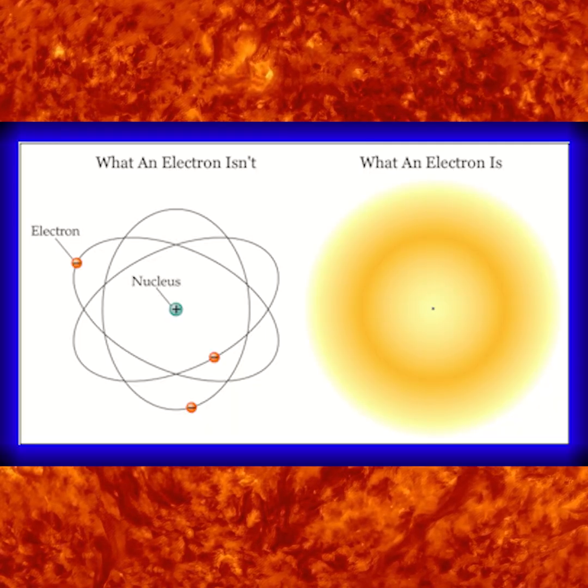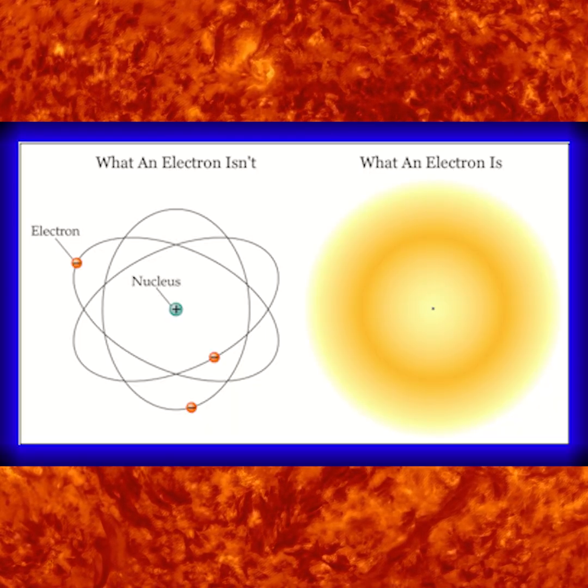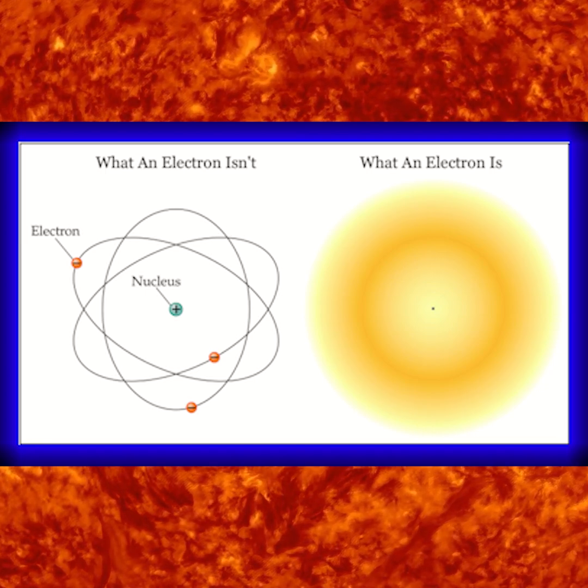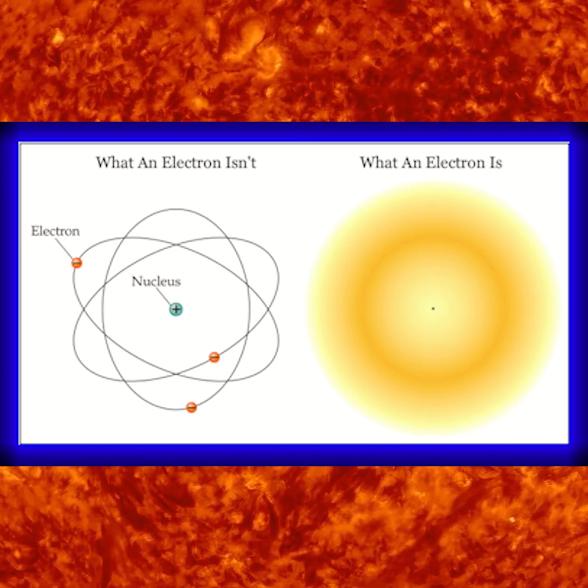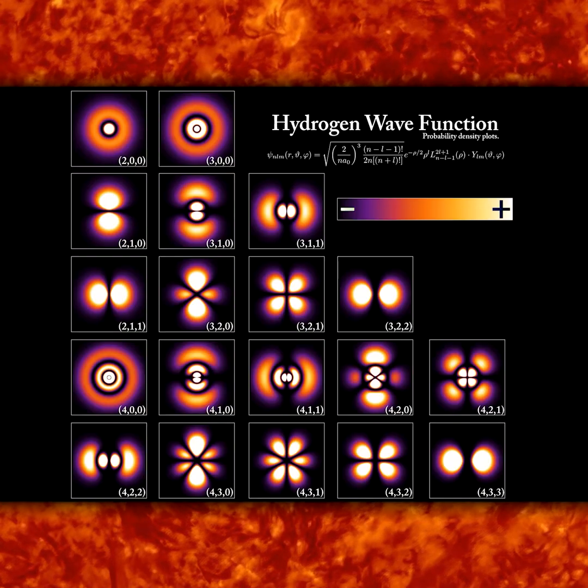When we talk about where an electron exists orbiting a nucleus, we don't talk about a location — rather, we talk about an electron cloud, which is the probability distribution in space in which that electron might exist. So in quantum, everything is statistics and probabilities.